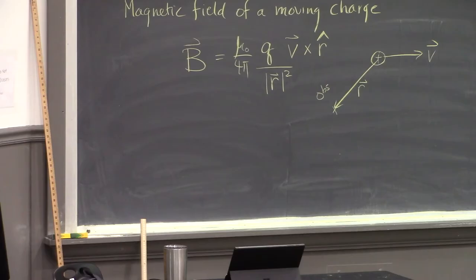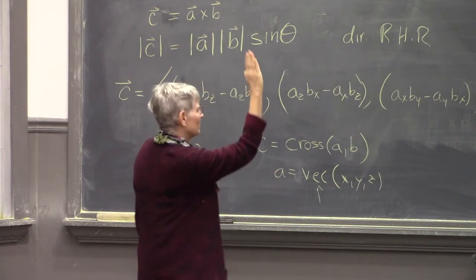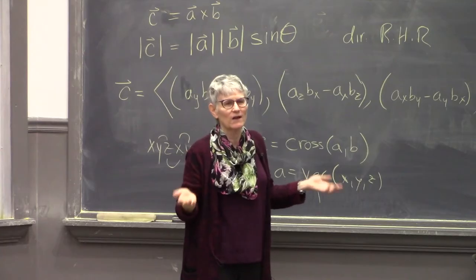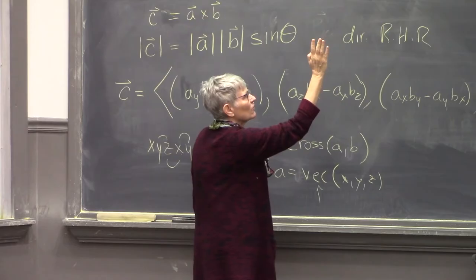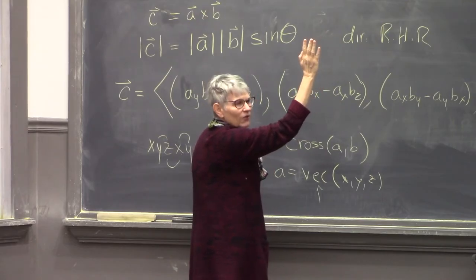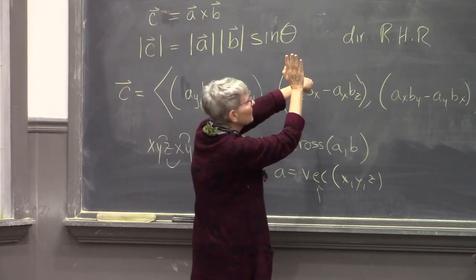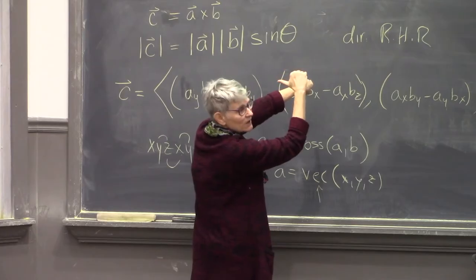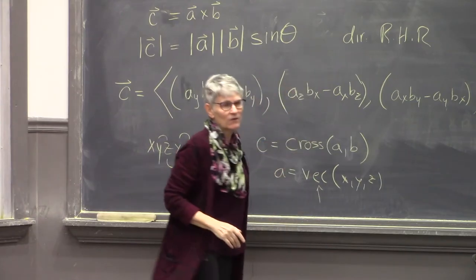To do the right-hand rule: first point your wrist and fingers in the direction of the first vector in the product, then curl your fingers through the angle theta toward the second vector. Since the second vector here is into the board, I keep my wrist straight, just bend my fingers, and the only way I can stick my thumb out is in the minus x direction.